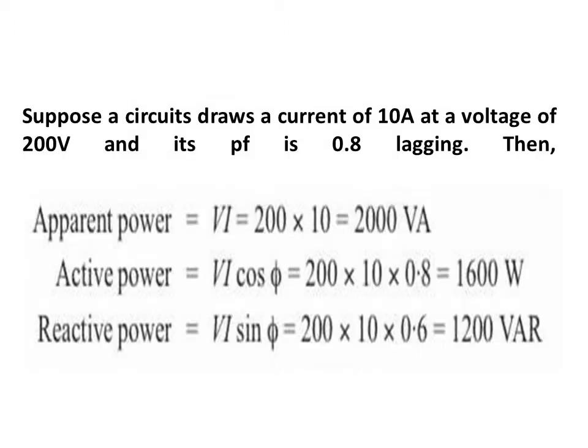Suppose a circuit draws a current of 10 ampere at a voltage of 200 volt and its power factor is 0.8 lagging, meaning the load is inductive. What is the apparent power, that is V·I? V is 200 and I is 10, so apparent power is 2000 VA. Active power is V·I·cos theta: V is 200, I is 10, and cos theta is 0.8 as given in the question, so it comes out to be 1600 watt.